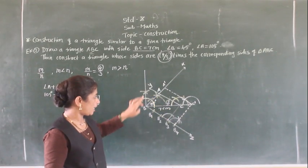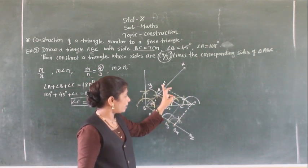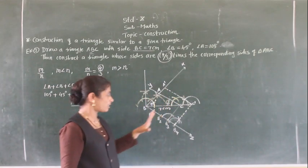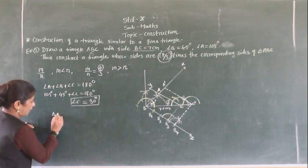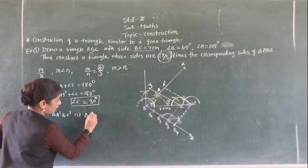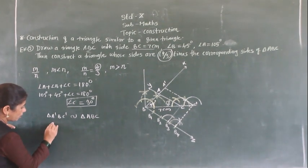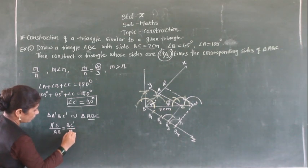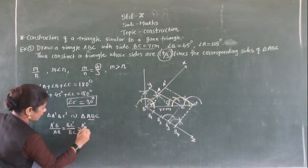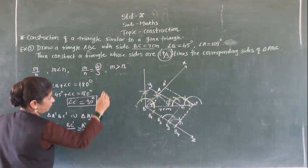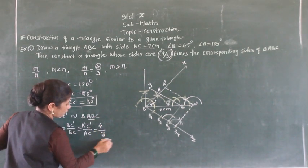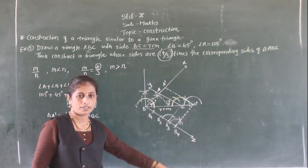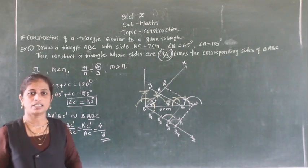So triangle A dash B C dash is similar to triangle ABC. We can write: A dash B / AB equals B C dash / BC equals A dash C dash / AC equals 4/3, the scale factor. Write the steps of construction step by step as we have done here. Now we will see the next construction. Thank you.